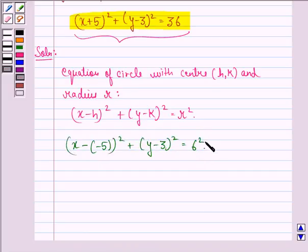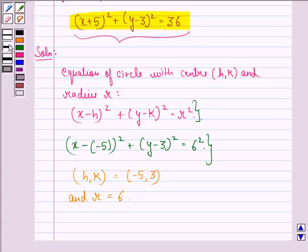When we compare these two equations, we see that the center (h,k) is (-5,3) and the radius r is 6.